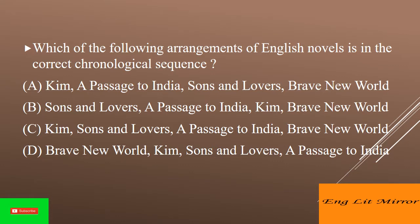Which of the following arrangements of English novels is in the correct chronological sequence? The answer is Option C: Kim, published in 1901; then Sons and Lovers, published in 1913; A Passage to India, published in 1924; and Brave New World, published in 1932.